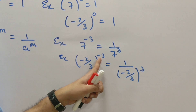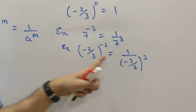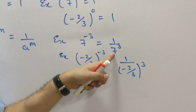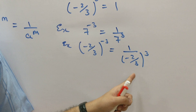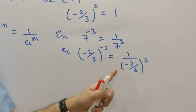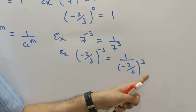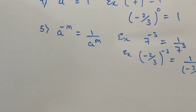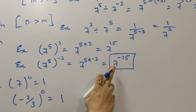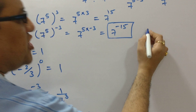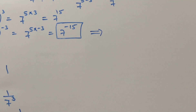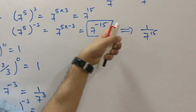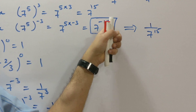Students must note that when the power's sign changes from negative to positive, the base sign does not change. The sign changes only for the power, not the base. Now, correlating back to the earlier result of 7 raised to minus 15: applying Law 5, this gives 1 upon 7 raised to 15. It is always advisable to keep our answer with a positive power and not a negative power.